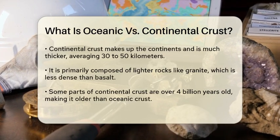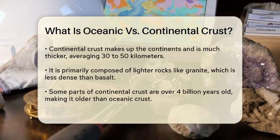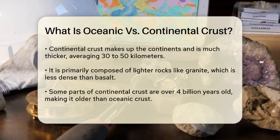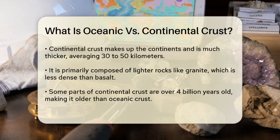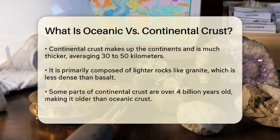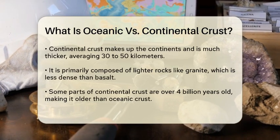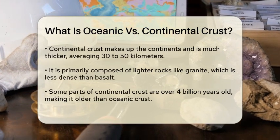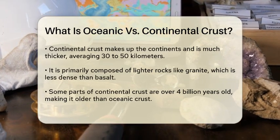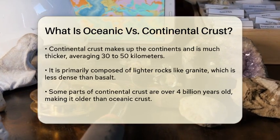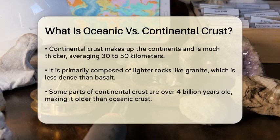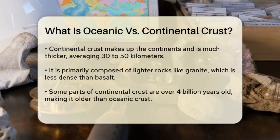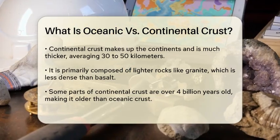Oceanic Crust is also younger than Continental Crust, with most of it being less than 200 million years old. It is continuously formed at mid-ocean ridges, where tectonic plates pull apart, allowing magma to rise and solidify.